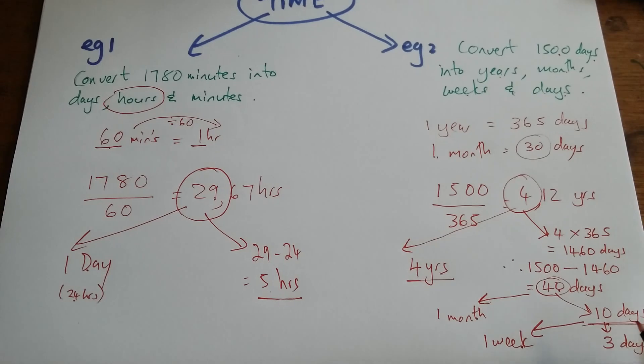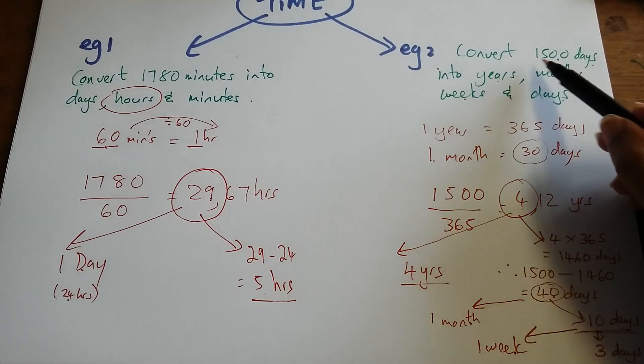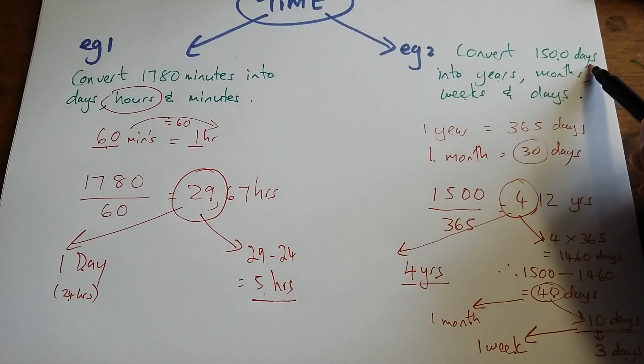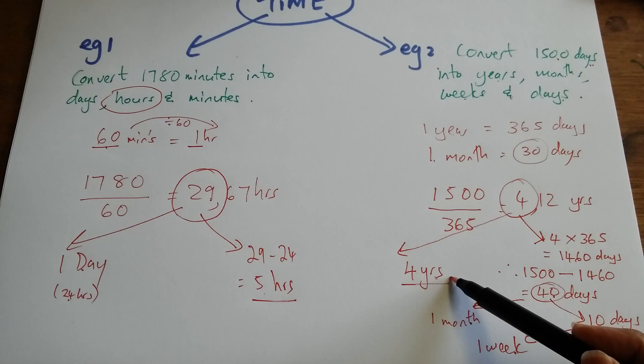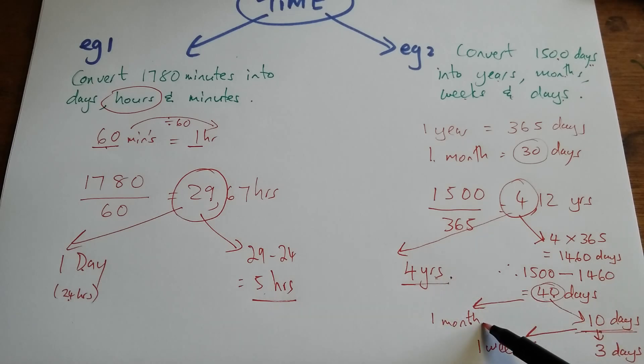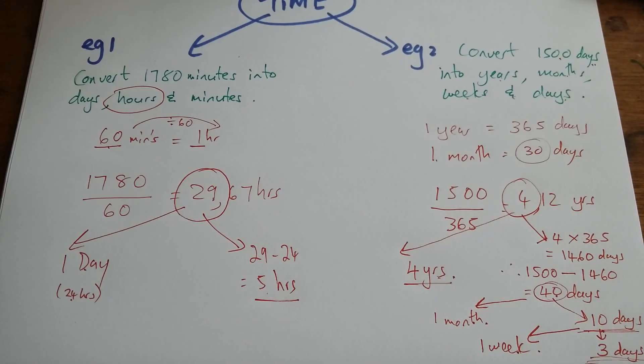So in other words, we're saying that 1500 days is the same as 4 years, 1 month, 1 week, and 3 days.